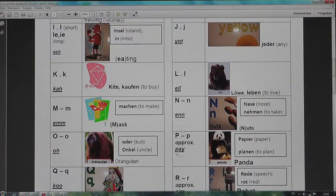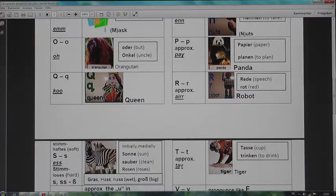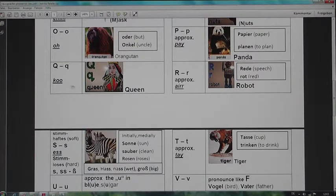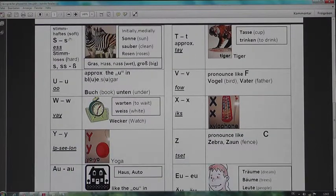P, like the P in Panda, wie Papier, planen, to plan. Q in a word like Queen. R in a word like robot, Rede, speech, Rot, the color red.